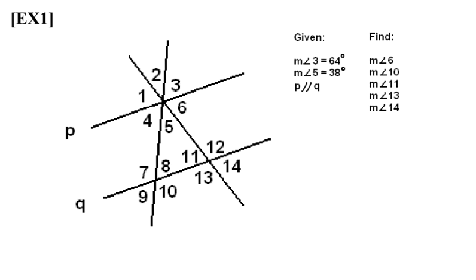Welcome to this second video regarding the notes about the converse of transversal results. In this video we will look at two examples and demonstrate how we can use these theorems to solve for different angle measures. The first of the two problems is currently pictured on the screen.